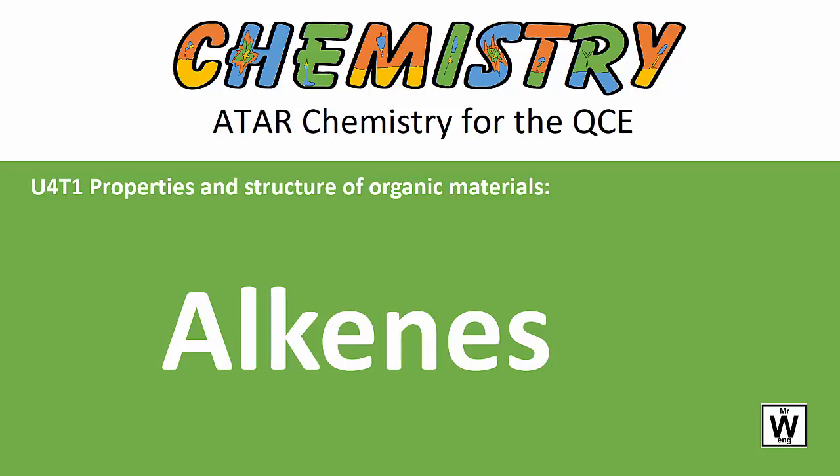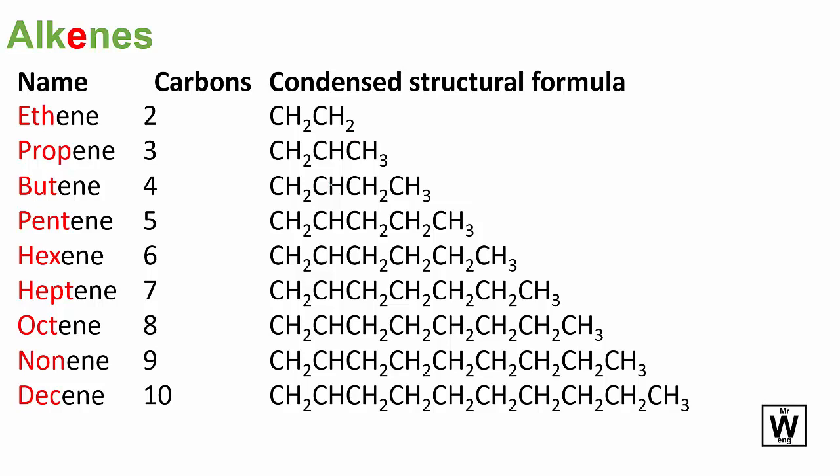Moving on to alkenes now, the only difference with alkenes is that they have a double bond instead. That's another way to write that one. And so for propene, it's basically the same stem but an 'ene' at the end now. So that's one, two, three, four, and that's how we write those.